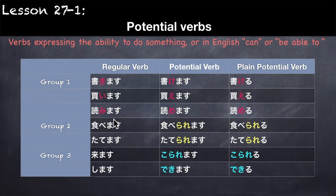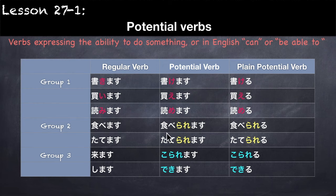For Group 2 verbs such as たべます and たてます, we just add られ before the ます. So たべます becomes たべられます. For the plain form: たべられる.